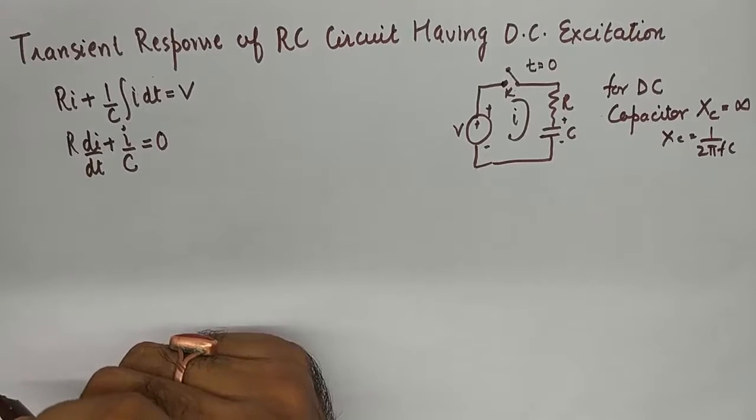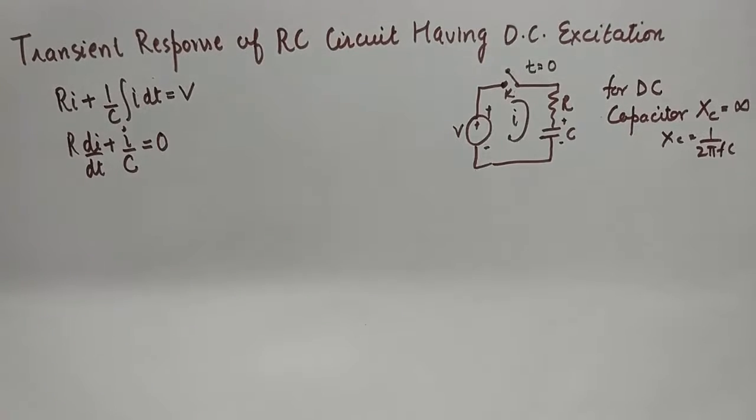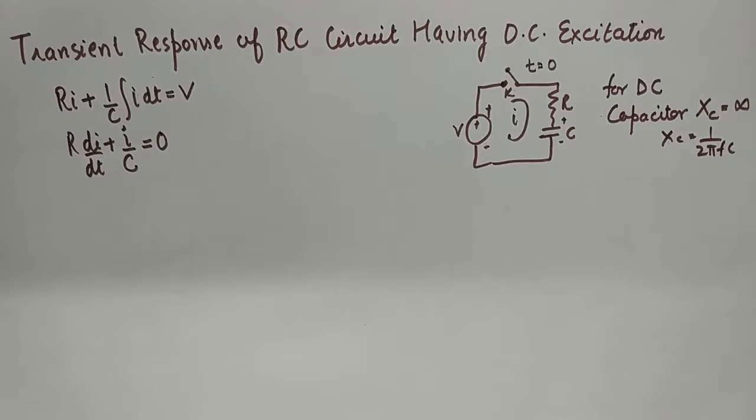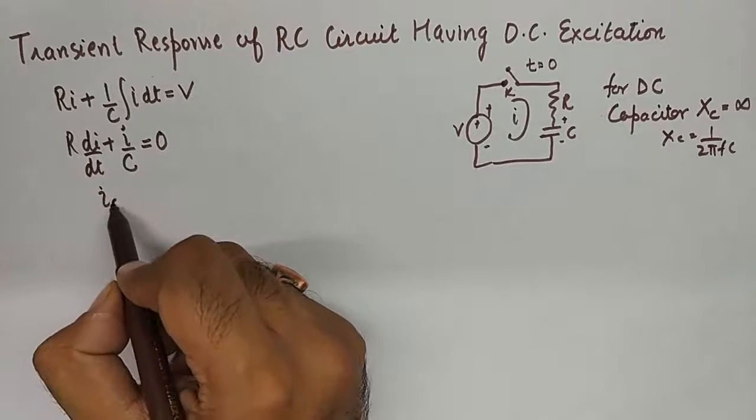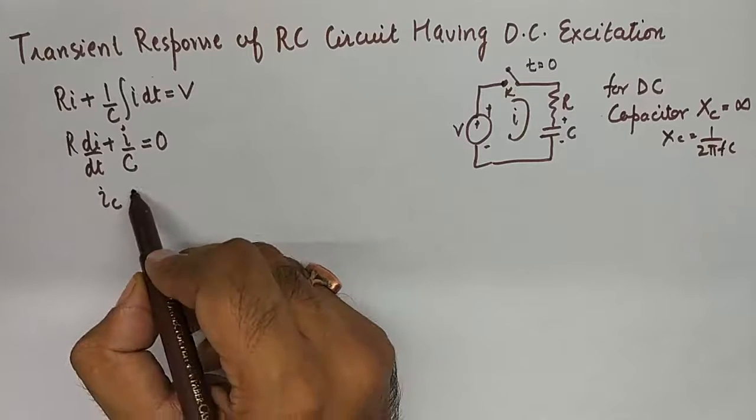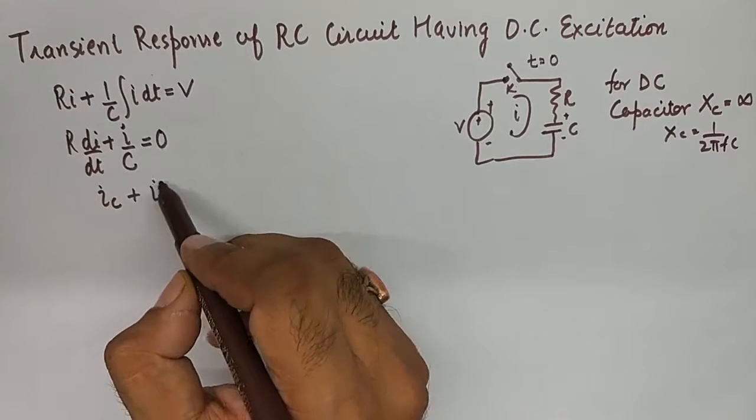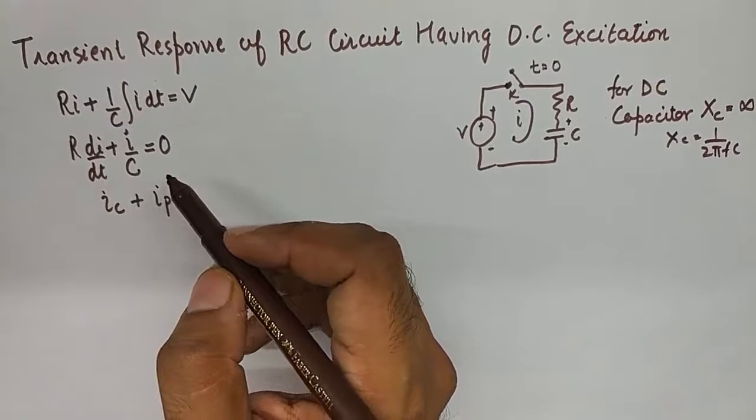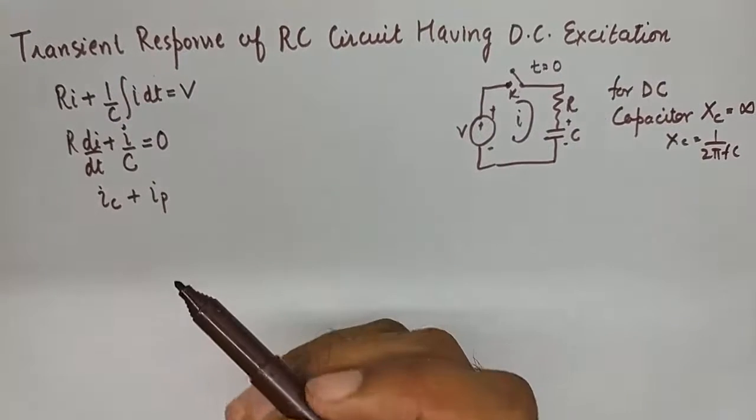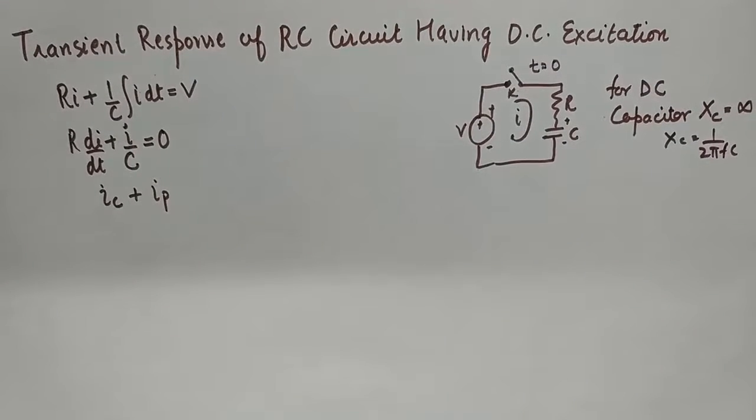Now this is a homogeneous differential equation whose solution will contain only ic and there will be no particular solution for this homogeneous equation. Why? Because the steady state value of the current for this circuit is 0. And if you see my previous video where we discussed RL circuit,